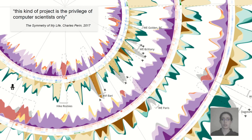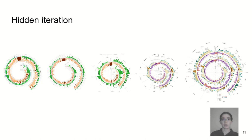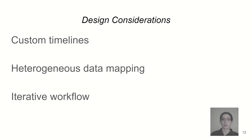Additionally, when we look at finished visualizations, you don't see the fact that it's actually very hard to mentally envision what these funky shapes are going to look like. Therefore, when creating them, authors need to go through a few iterations, and tools need to support this. A tool supporting idiosyncratic timeline authoring will therefore need to address the following considerations: supporting custom timelines, supporting heterogeneous data mapping, and supporting an iterative workflow.